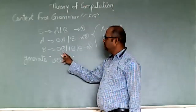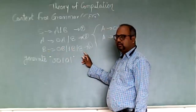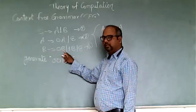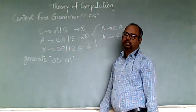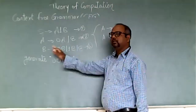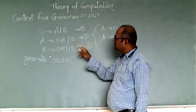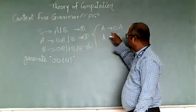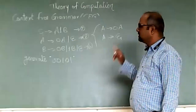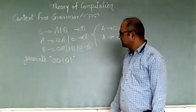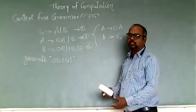Similarly, for B we have three productions: B produces 0B, B produces 1B, and B produces epsilon. This means the B variable can be replaced with 0B, or with 1B, or with epsilon — any of these. So don't get confused; the productions can be written together simply to reduce the number of lines.